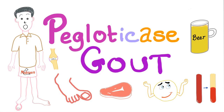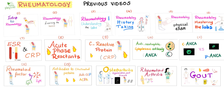It's Medicosis Perfectionitis, where medicine makes perfect sense. We continue our playlist on rheumatology. In previous videos, we talked about gout. Today, we'll talk about a medication used to treat gout: pegloticase. Please watch these videos in order, especially my videos on gout, gout diagnosis, and gout treatment.